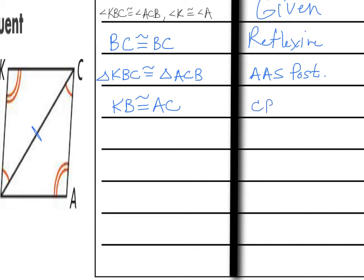This is what we call CPCTC — corresponding parts of congruent triangles are congruent. So again, the goal is to prove your triangles are congruent first, and then you can say all the corresponding sides and angles are congruent as well.